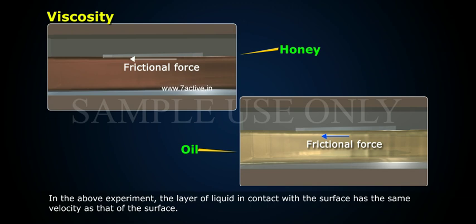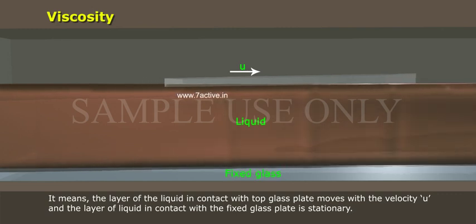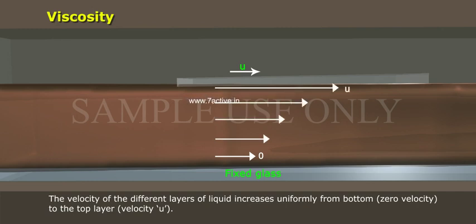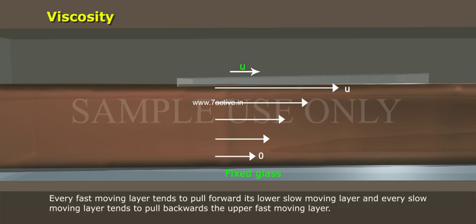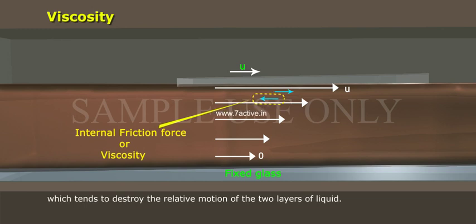In the above experiment, the layer of liquid in contact with the surface has the same velocity as that surface. The layer in contact with the top glass plate moves with velocity U, and the layer in contact with the fixed glass plate is stationary. The velocity of different layers increases uniformly from bottom (zero velocity) to the top layer (velocity U). Every fast-moving layer tends to pull forward its lower slow-moving layer, and every slow-moving layer tends to pull backward the upper fast-moving layer. This produces a viscous force — internal frictional force — between the two layers, which tends to destroy their relative motion.